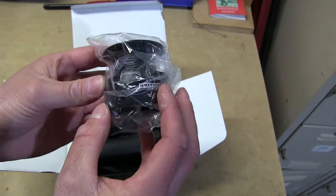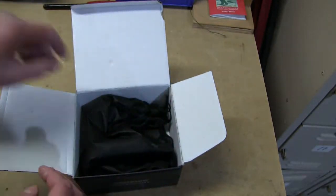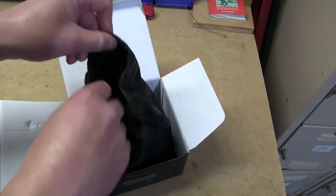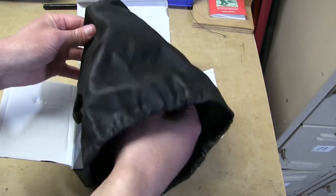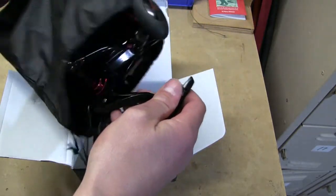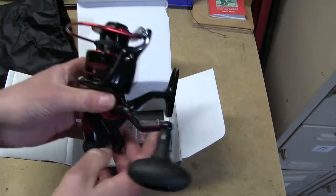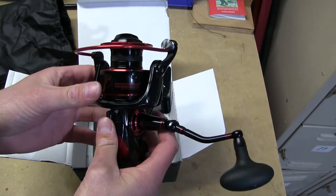Put that to the side. It looks like it comes in a nice little nylon-type bag. Pull the reel out, and here's the reel. It's pretty attractive—black and red, kind of a chrome red color, so it looks kind of cool.